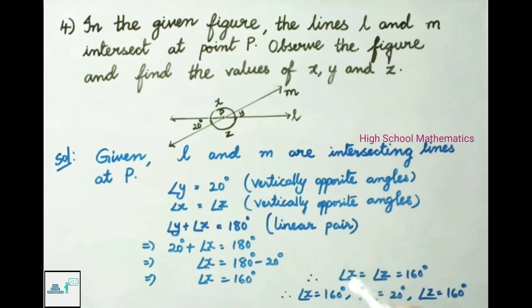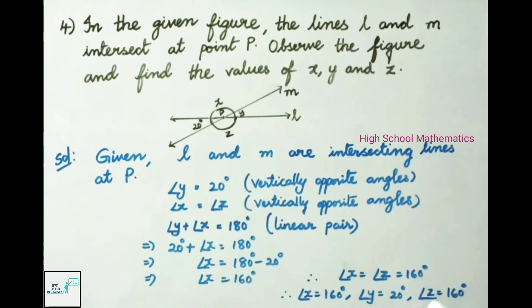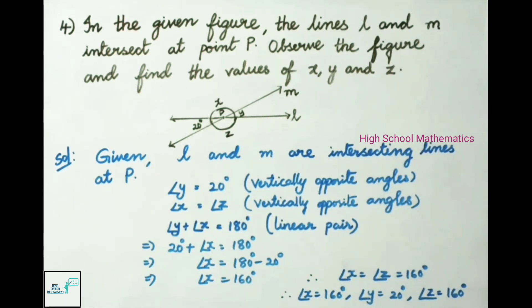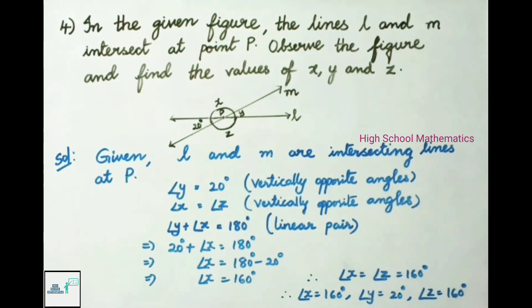Therefore, angle X equals angle Z as vertically opposite angles, so angle Z is also equal to 160 degrees. Final answers: angle X is 160 degrees, angle Y is 20 degrees, and angle Z is 160 degrees.